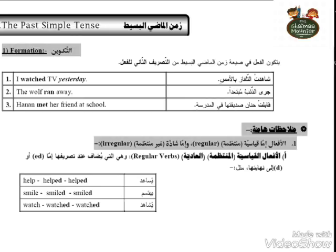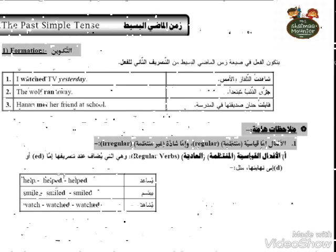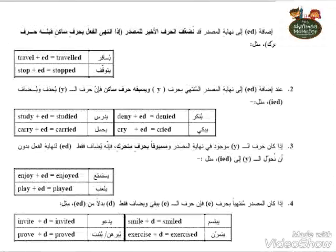Now I have verbs called regular verbs — the regular verbs where we add 'D', 'E D', or 'I E D' to the ending. For example, if the verb ends with a vowel followed by a consonant, like 'travel' ending in E and L, we double the last letter and add 'ED' to form the past, like 'traveled.'